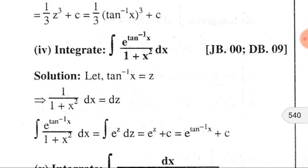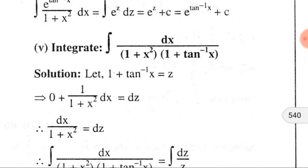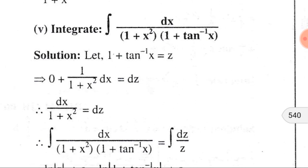Dear audience, in this problem we have ∫e^(tan⁻¹x)/(1+x²) dx. If you observe carefully, you will find that the derivative of tan⁻¹x is 1/(1+x²), which is present here. That is why, substituting tan⁻¹x by z, you can solve this problem.